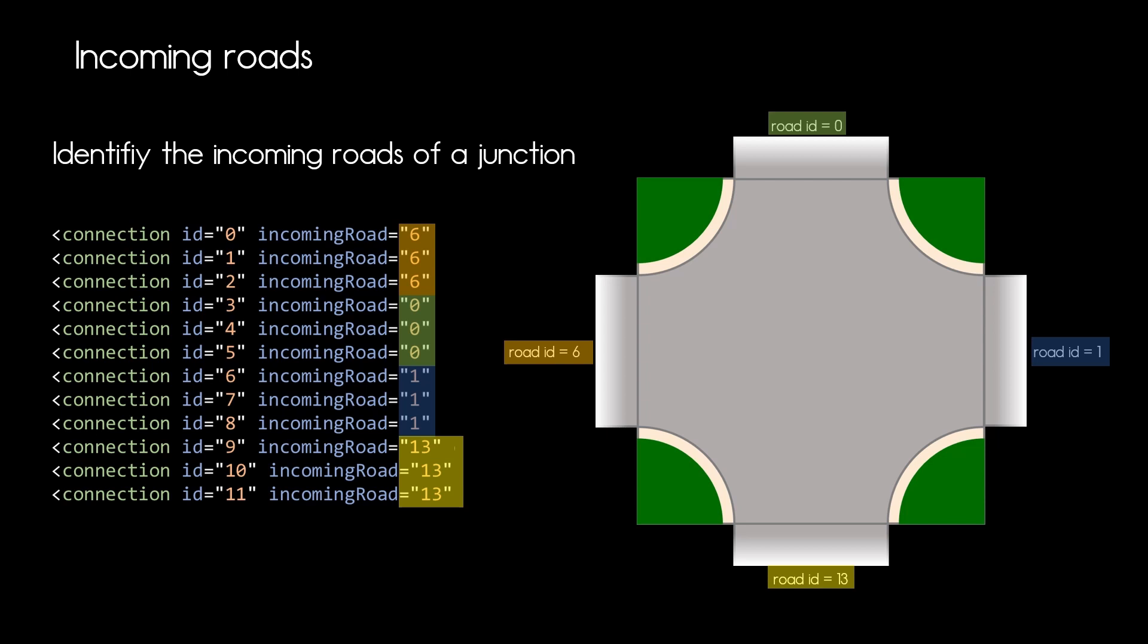You can see that all four roads are coming into the junction. Next we need to figure out how the connections within the junctions are running. From the connection element itself we know what connecting road is linked to which incoming road. What we do not know is where it leads to.